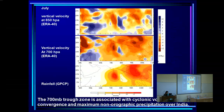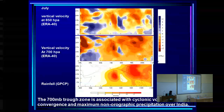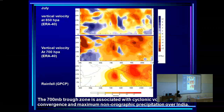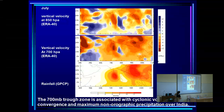Looking at vertical velocity at 850 mb versus 700 mb: at 850 mb you get positive vertical velocity over both the rain region and the heat low, because the heat low drives upward movement. But at 700 mb, the upward motion is restricted to where the rain happens. So 700 mb cleanly separates the rain-driven ascent from the heat-driven ascent.